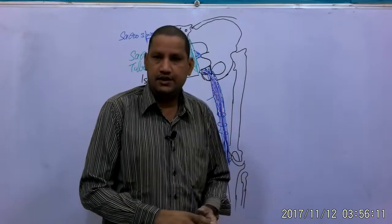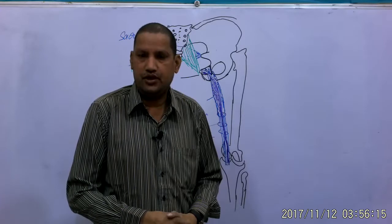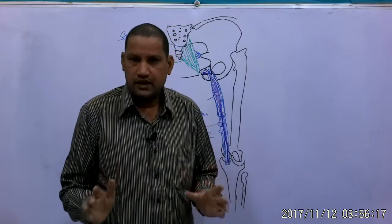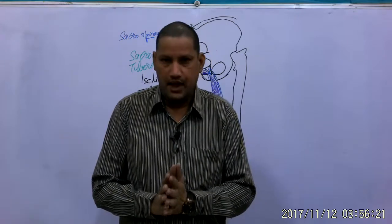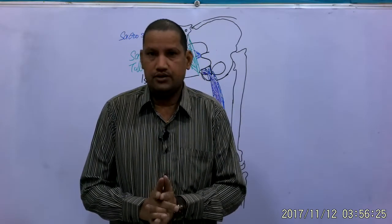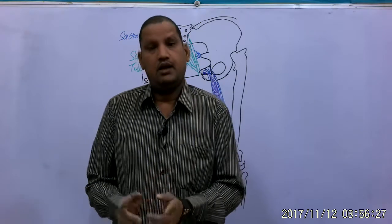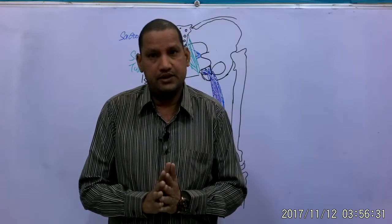These two muscles with the long head of the biceps femoris and the ham part of the adductor magnus extend the hip joint and flex the knee joint. So collectively all four muscles of the ham region are extensor for the hip joint and prime mover for the flexion of the knee joint.